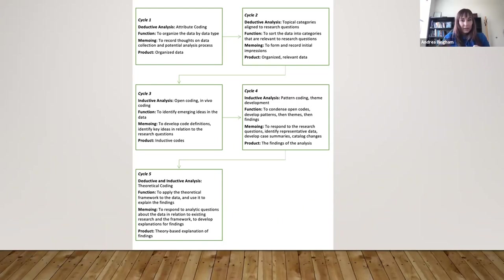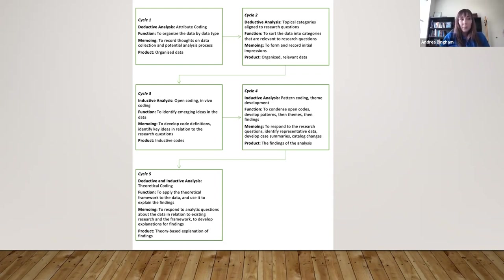Many qualitative researchers use themes and findings interchangeably, but I do not. I look at themes as more general categories — a word or phrase to identify a theme — and then I take those words or phrases and turn them into a finding statement that answers the research question. This cycle is very big for the qualitative inductive work. You're pulling representative data, developing case summaries if you're doing a case study, or pulling together narratives if you're doing narrative inquiry.